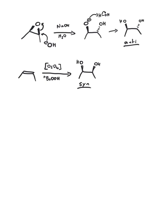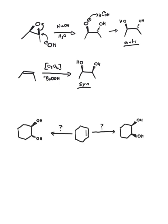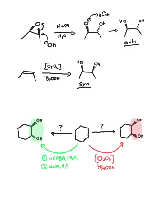It also gives me the ability to ask my favorite type of question: what conditions would you require to make each of the following products? Recall to focus on the stereochemistry of the products, and think about what method would give you those. And here are the answers. The syn-addition occurred with the osmium tetroxide method, whilst the anti-addition involved forming an epoxide first and then opening it to give you the diol.